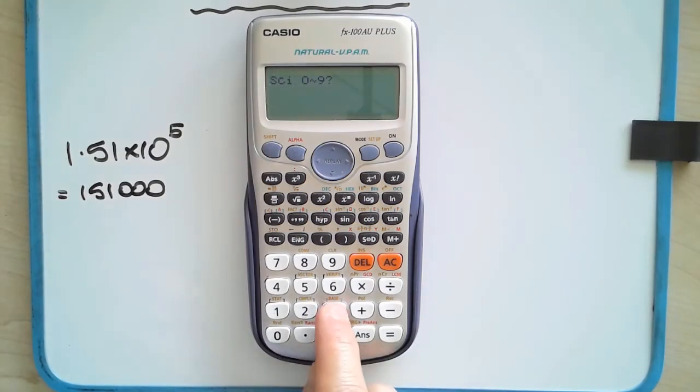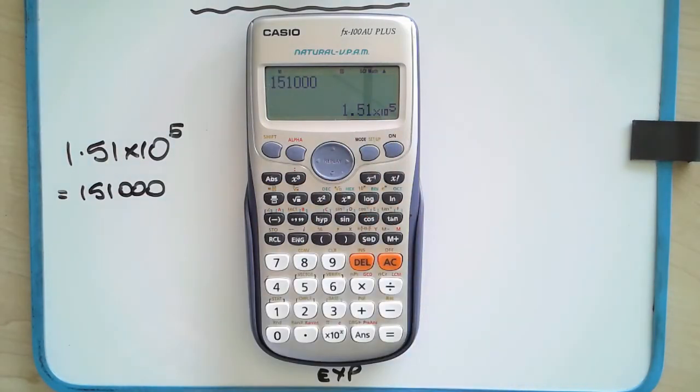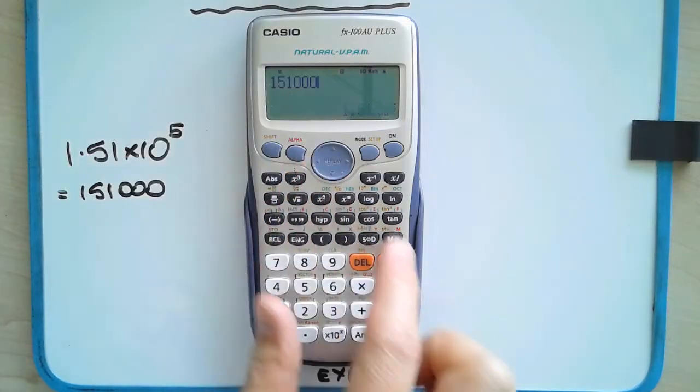And you could enter in then the number of significant figures that you want. So let's say we're entering three significant figures. 1.51 times 10 to the power of 5. So it's really, really useful like this.